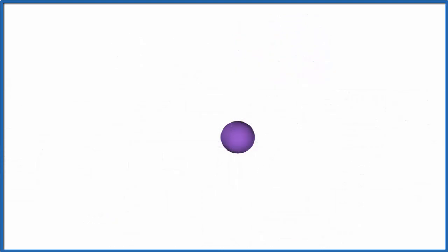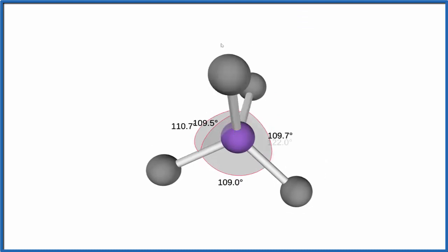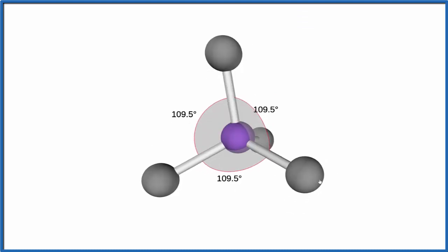So the purple, that'll be the central carbon. Let's add two chlorine atoms. They spread out to be as far as they can from each other. And then we're going to add the two hydrogen atoms, one, two. And we end up with what's called a tetrahedral molecular geometry.